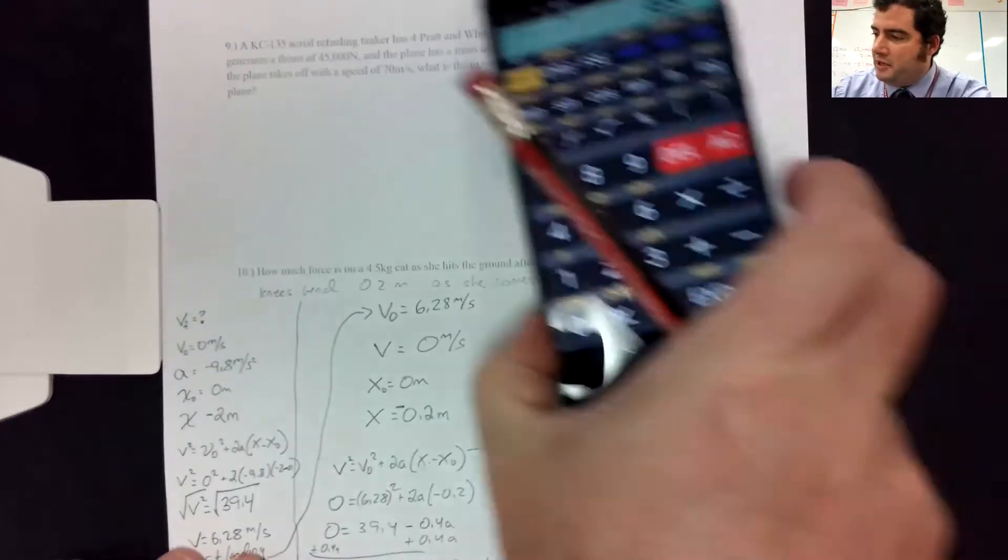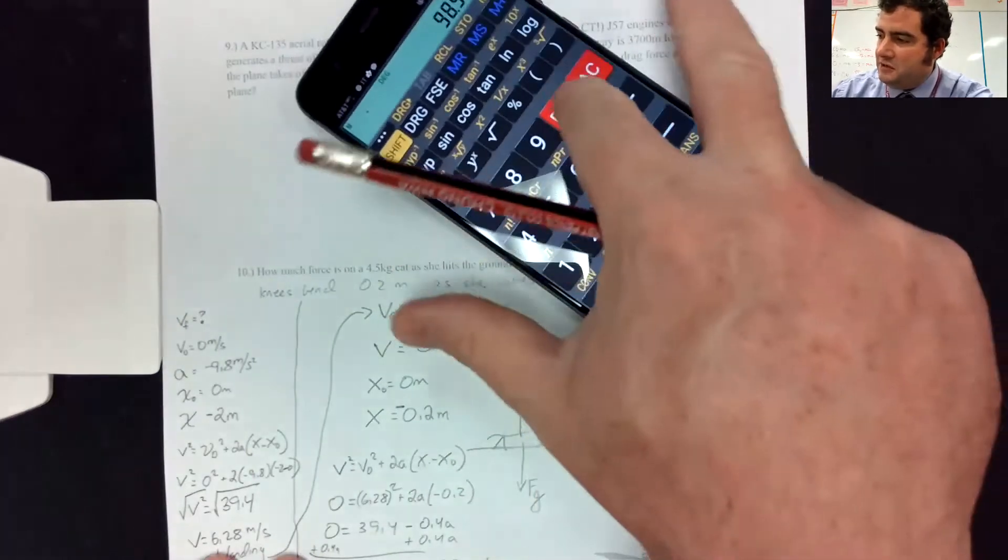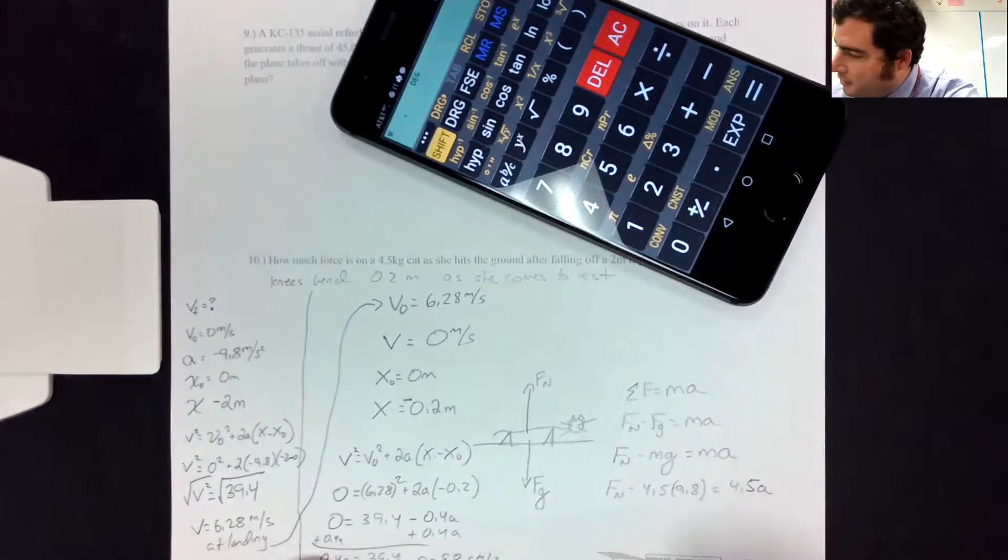That's a pretty big acceleration. That's like 10 times the acceleration of gravity or 10 Gs. I think fighter pilots would black out at that point. So this cat's hitting the ground hard. I feel bad about that. I didn't mean to make it an evil problem.